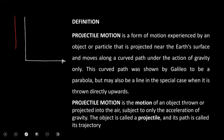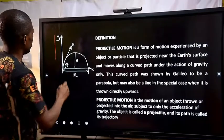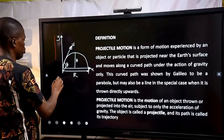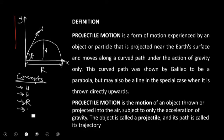We have an object that is projected such that it goes through this parabolic form. We have the velocity of projection, the height, the range, the angle of projection, the y-axis, and the x-axis. We're going to look at all these terms: u, h, r, and theta.